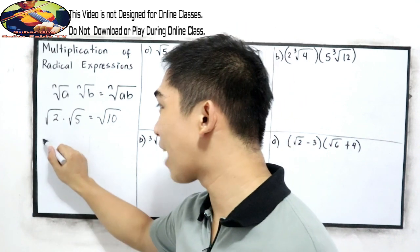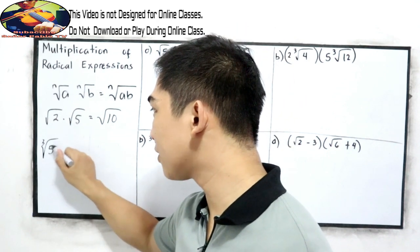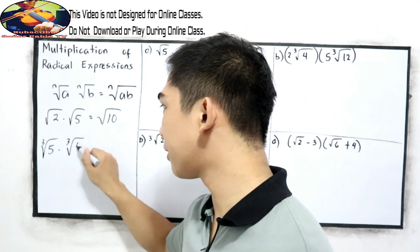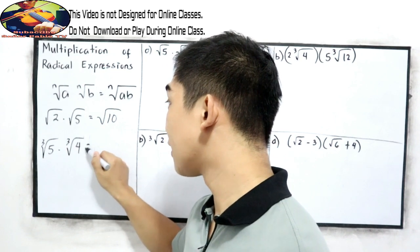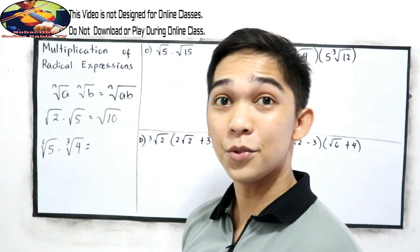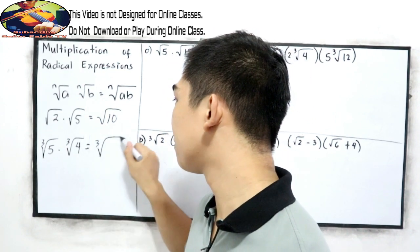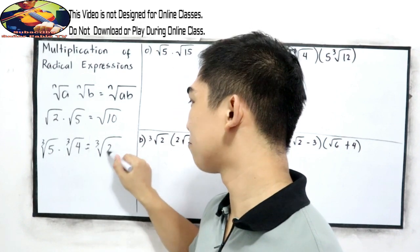And if you have cube root of 5 times cube root of 4, that is equal to cube root of 5 times 4, which is cube root of 20.